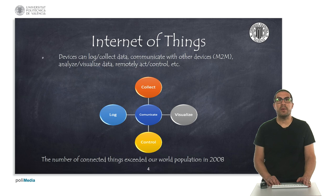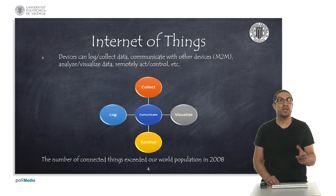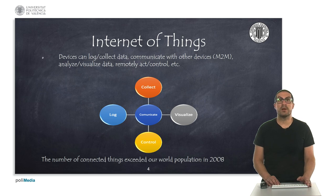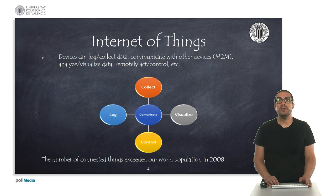An IoT device can log and collect data, communicate with other devices or machines, or remotely control a physical variable. We use them to analyze and visualize data which is published, in some cases, in the cloud — specialized servers that accept this type of data.